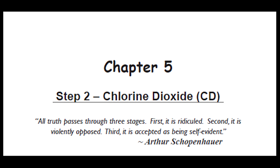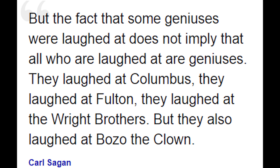And then there's this one, attributed to Schopenhauer, which also can't be confirmed: 'All truth passes through three stages. First, it is ridiculed. Second, it is violently opposed. Third, it is accepted as being self-evident.' I'd call this a Galileo complex — oh, look at me, righteously fighting against the stubborn scientific consensus, you'll see I'm right in the end. I'll respond to that with another quote: 'But the fact that some geniuses were laughed at does not imply that all who are laughed at are geniuses. They laughed at Columbus, they laughed at Fulton, they laughed at the Wright brothers, but they also laughed at Bozo the Clown.' Carl Sagan.